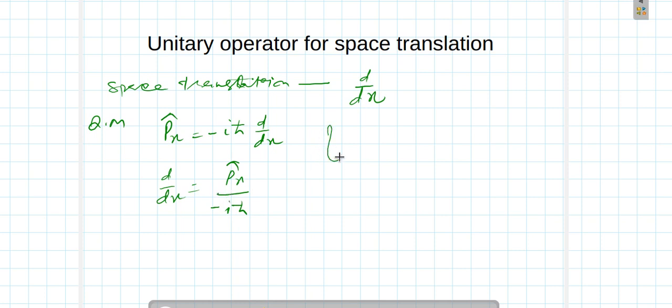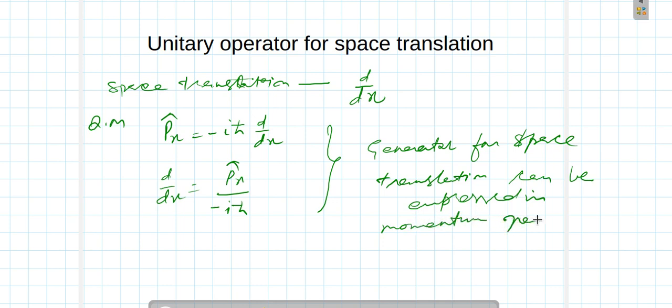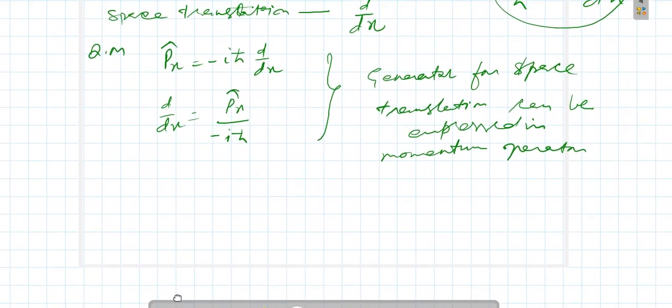So this suggests us that this generator for space translation can be expressed in momentum operator. As momentum operator divided by ℏ is proportional to d/dx, we will define this generator as px over ℏ.